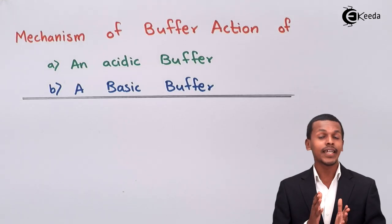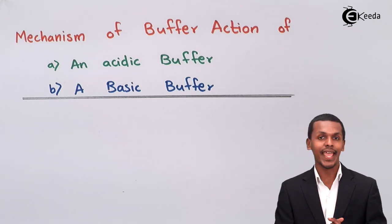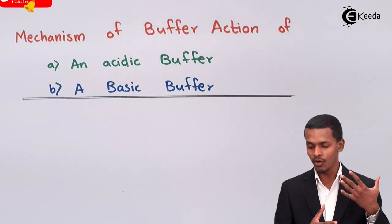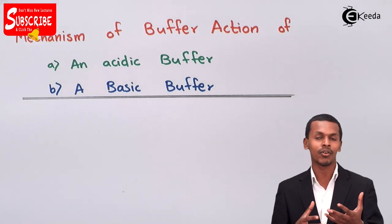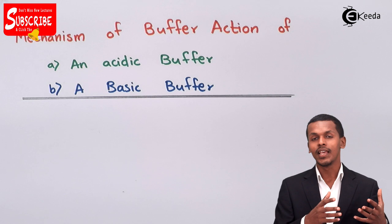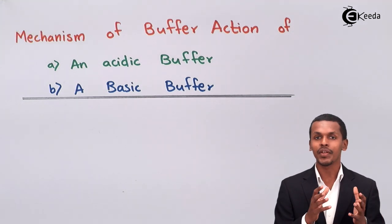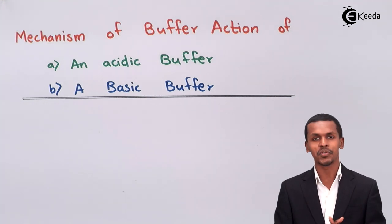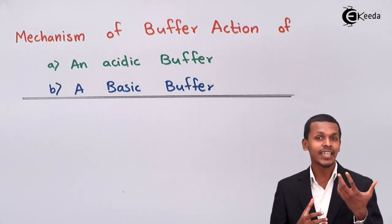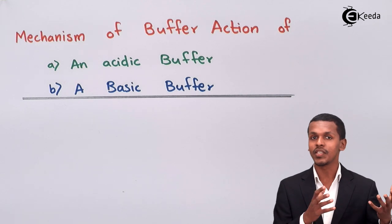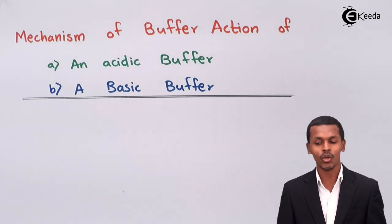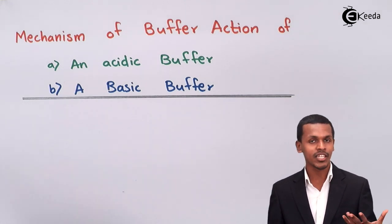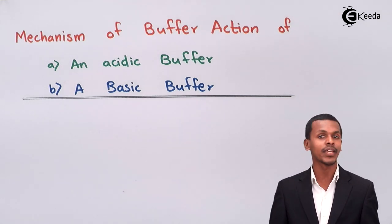We are going to study the mechanism of buffer action from an acidic buffer or from a basic buffer. Buffer action means the process where we see that the pH of a buffer solution doesn't change. The resistivity to change in pH is basically known as buffer action. Now we will individually talk about the mechanism of an acidic buffer as well as the mechanism of a basic buffer.